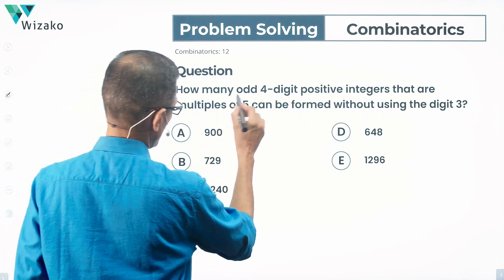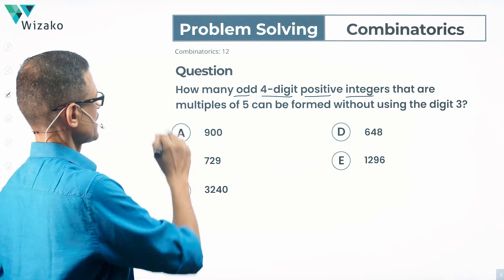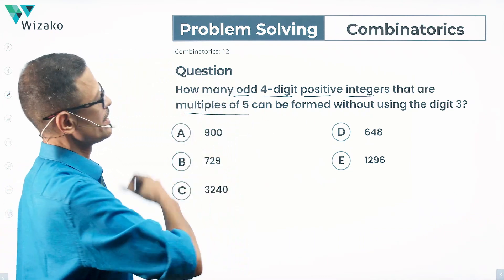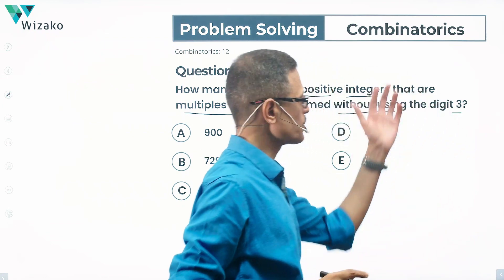How many odd 4-digit positive integers that are multiples of 5 can be formed without using the digit 3?